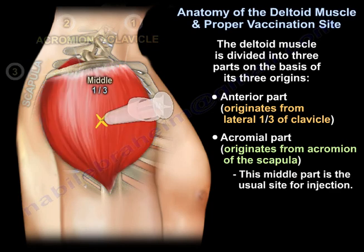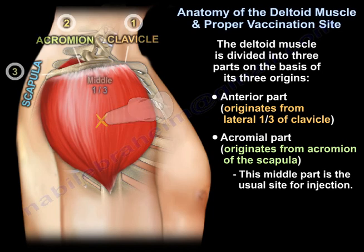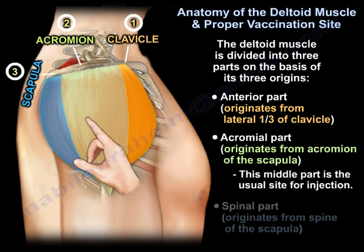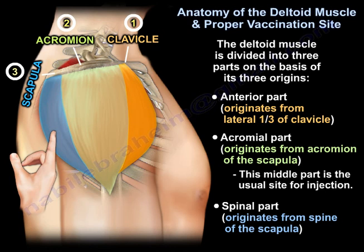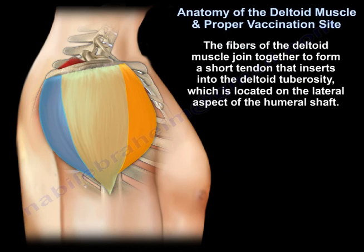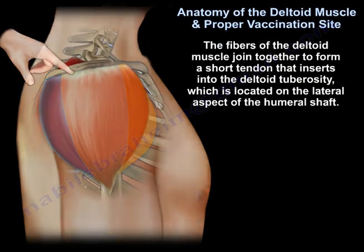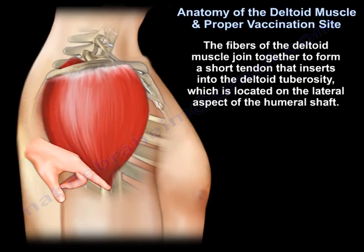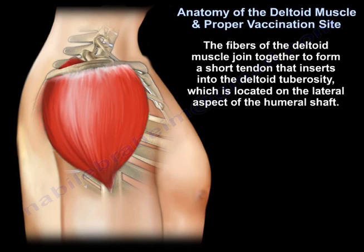This middle acromial part is the usual site for injection. There is also a spinal part that originates from the spine of the scapula. The fibers of the deltoid muscle join together to form a short tendon which inserts into the deltoid tuberosity, located on the lateral aspect of the humeral shaft.